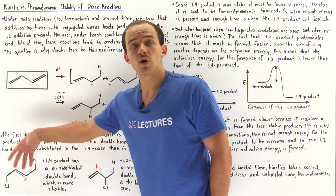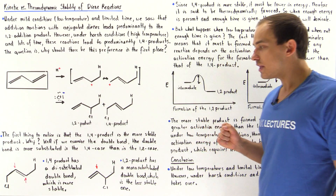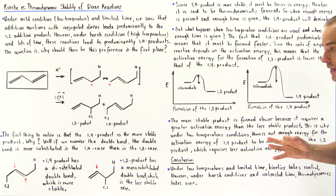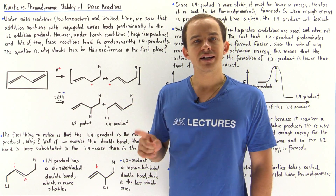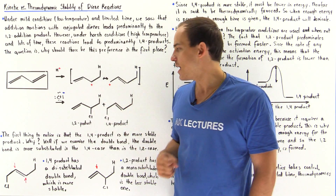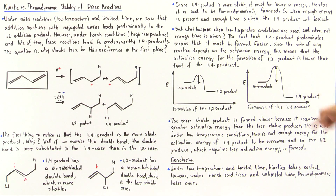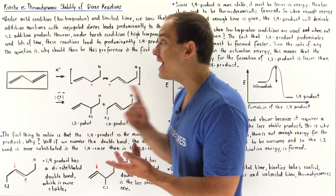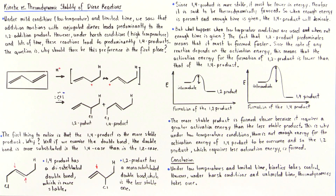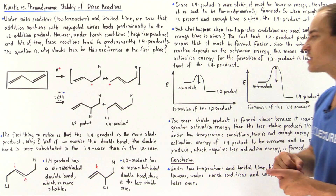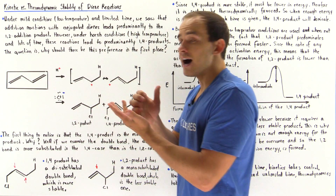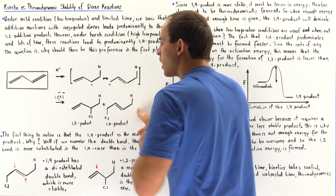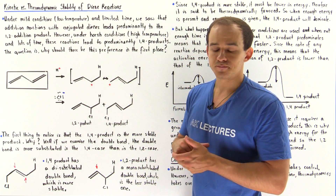That is exactly why the 1,4 product is more stable than the 1,2 product. Being more stable means it is lower in energy, and therefore the 1,4 product is thermodynamically more favored. When enough energy is present — that is, when the temperature is high enough and enough time is given — the 1,4 product will be the one that predominates.